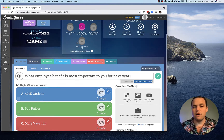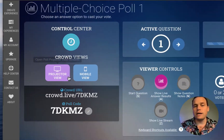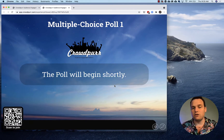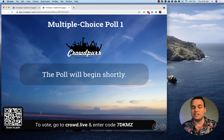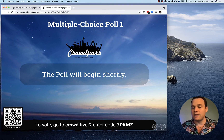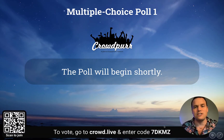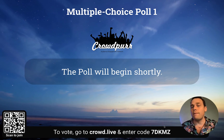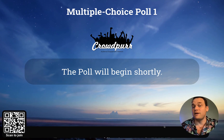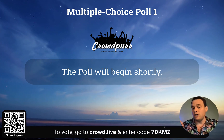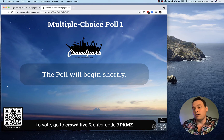We've made our question with available answers and can proceed through that for question two and question three. Now we're ready to bring up the projector view. This is the presentation format of your poll — it has a QR code that your crowd will scan with their phone, or they can go to their mobile browser and type crowd.live and the code, 7dkmz. You can put this in full screen mode and share it on a Zoom meeting, YouTube live stream, or WebEx for virtual meetings. It's called the projector view because CrowdPro works well for live and hybrid events — you can share it on an overhead projector and it becomes like a PowerPoint view everyone sees as they vote on their mobile device.